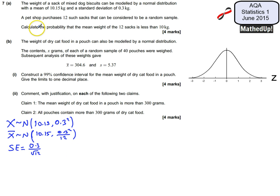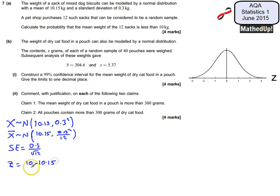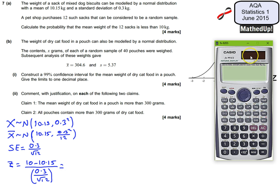I can now use this to work out my Z value. The question asks for the probability that the mean weight of the 12 sacks is less than 10kg. The Z value is equal to 10 minus the mean of 10.15, divided by the standard error of 0.3 divided by root 12. Putting that into the calculator gives Z = (10 − 10.15) / (0.3 / √12).